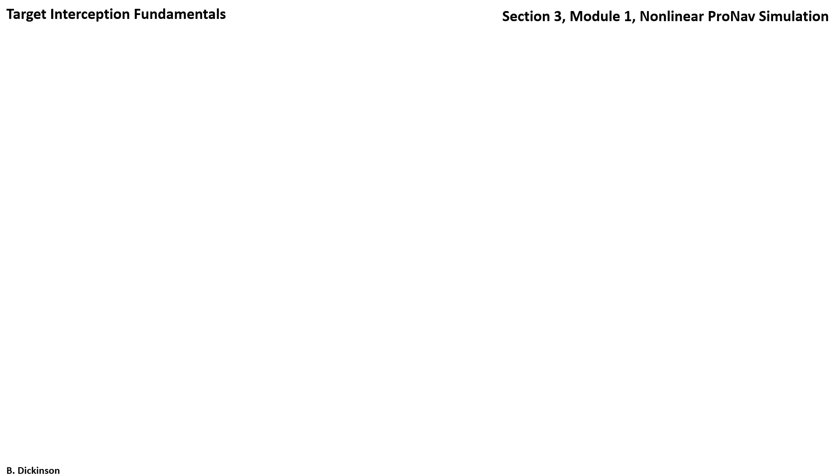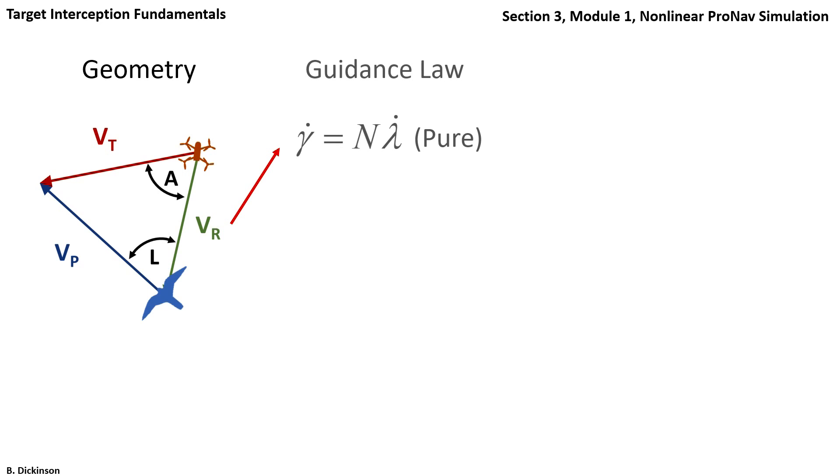Let's do a quick recap before we continue. We started in Section 1 with the geometry of the collision triangle, and then in Section 2, we looked at pure proportional navigation. We did a qualitative introduction to enforcing the collision triangle based off of a simple law that related the time rate of change of the line of sight angle to the time rate of change of the flight path angle.